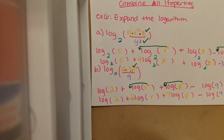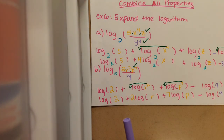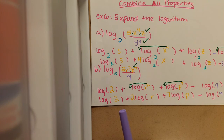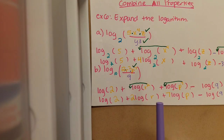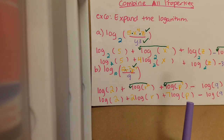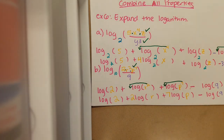And that's it. That would be my final answer: log of 2 plus 2 log of r plus 7 log of p minus log of 9. The base is 10, though we don't need to write it.